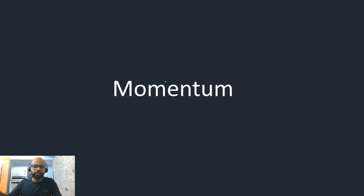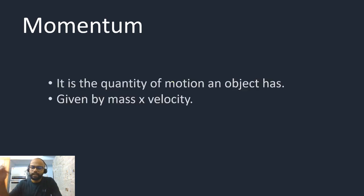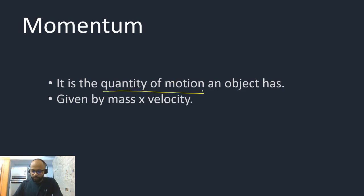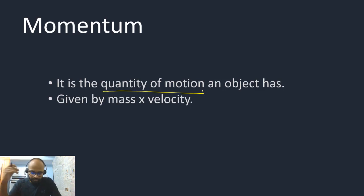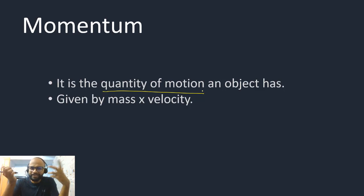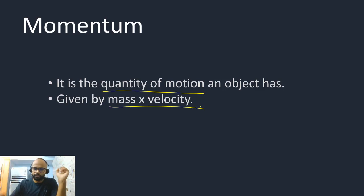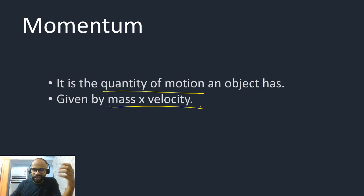Let me begin with the term momentum. What is momentum? It is the quantity of motion an object has. This is the definition you'll find on the internet — whenever you type momentum, the first result is the same: it is the quantity of motion an object has. Now, what is this quantity of motion? I know motion, displacement, velocity — but what is this quantity of motion? That is the problem students face. The formula is mass times velocity.